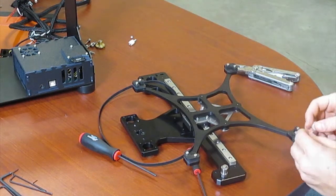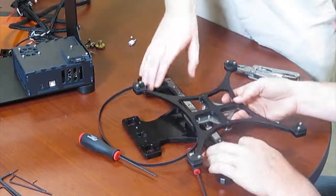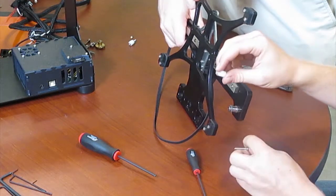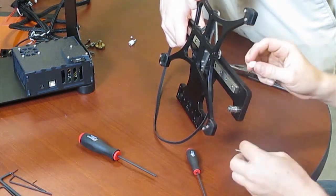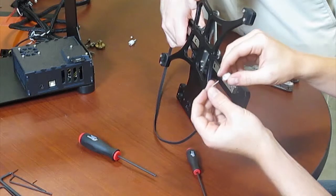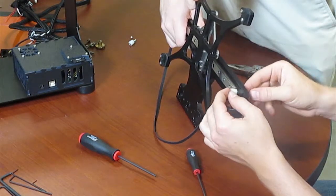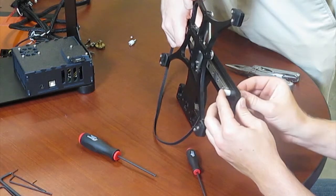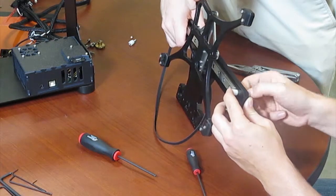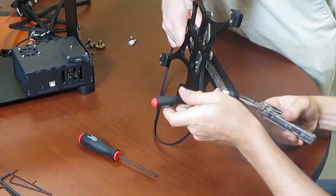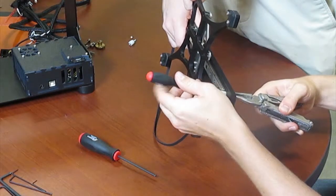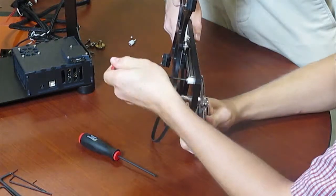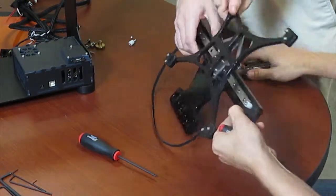You might want to have a friend help you with this as it can be kind of tricky. To mount the end stops, use M3 by 22 screws, a thick nylon spacer, and a lock nut. You take the bolt, put it through the nylon spacer, stick it through the hole at the end of the carriage, and then secure it on the back with a nut and tighten. Repeat on the other side.